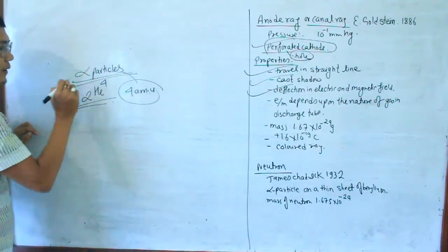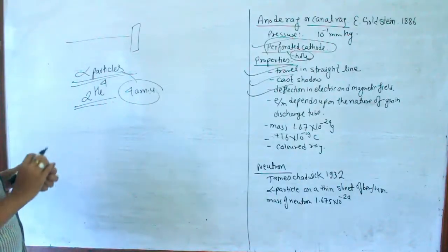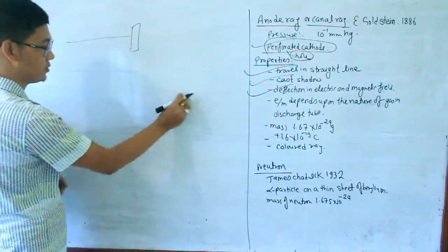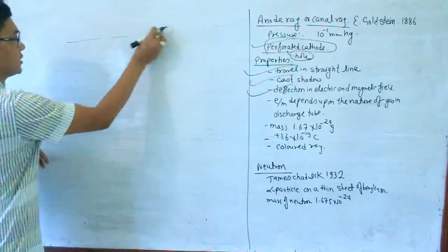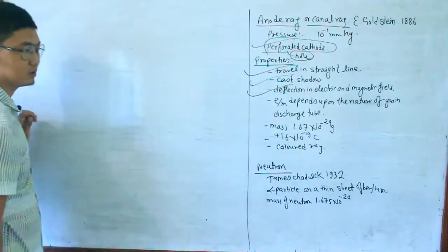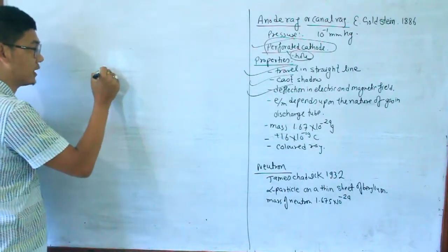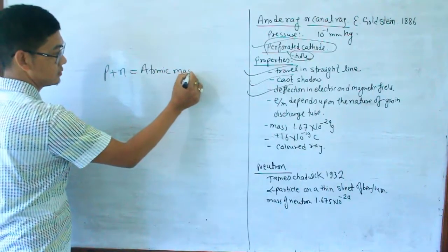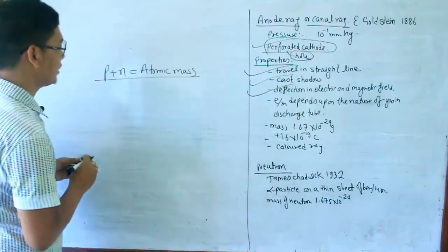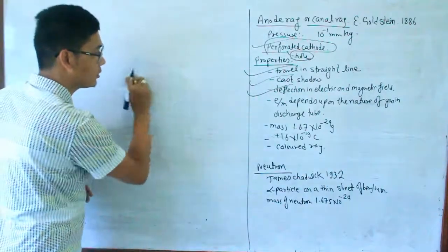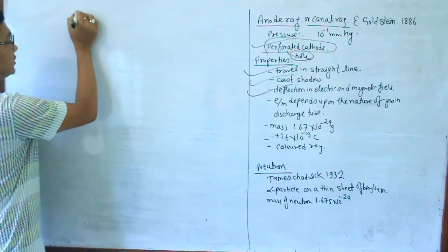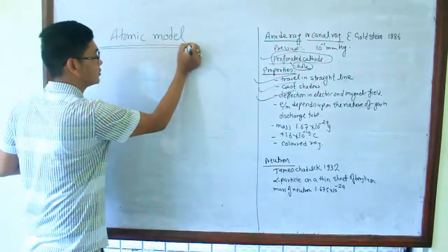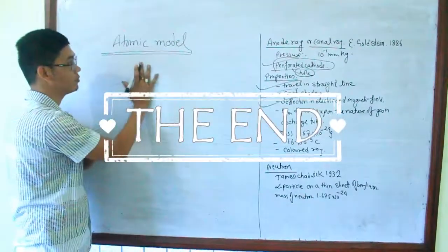Alpha particles were made to strike a target. This led to the discovery of the neutron. If the atomic number is the number of protons, then the neutron accounts for the remaining atomic mass. Neutrons are neutral — they have no charge. So the atomic mass equals protons plus neutrons. This completes the atomic model. If you like and subscribe to our channel, we will discuss more in the next video.